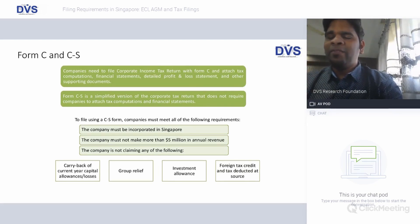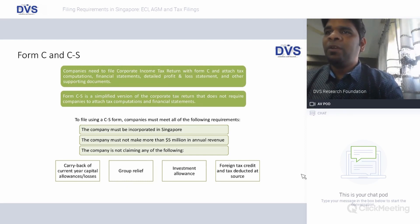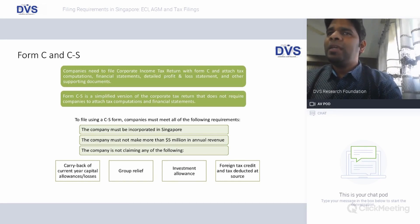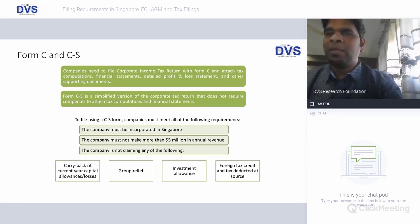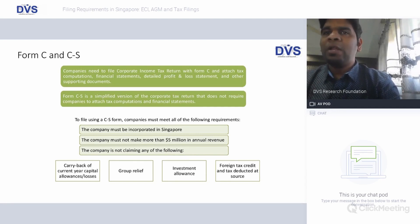To summarize the IRAS filings: every company must do two types of filing each year — the ECI (Estimated Chargeable Income) and the corporate income tax return filed with IRAS during the assessment year. For the corporate income tax return there are two forms: Form C, which includes full calculations, financial statements, and detailed profit and loss account with supporting documents; and Form CS, a summarized version available to companies incorporated in Singapore with not more than five million annual revenue that are not claiming any allowances or benefits under the Income Tax Act.